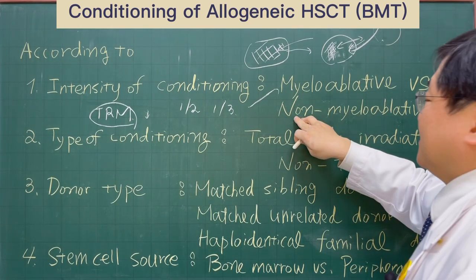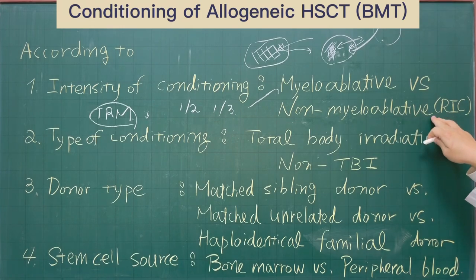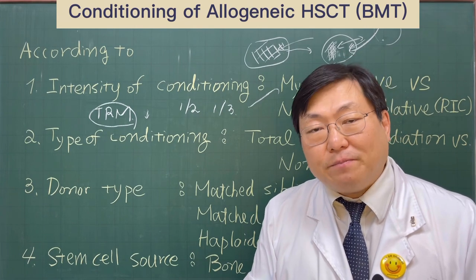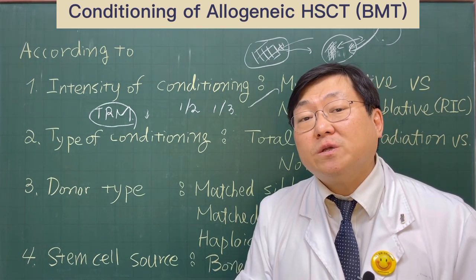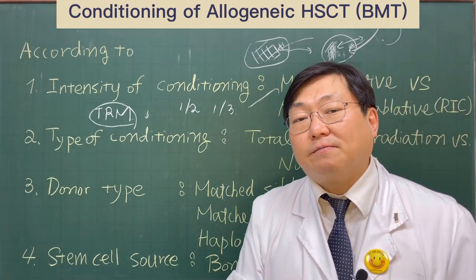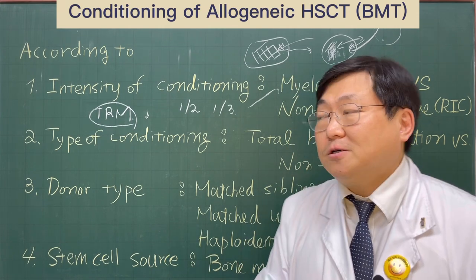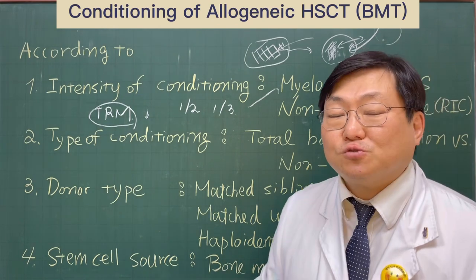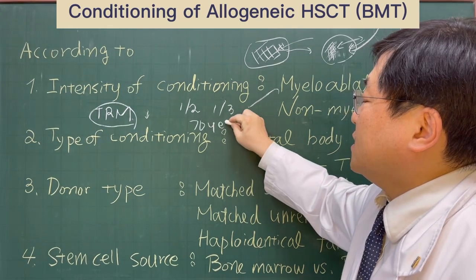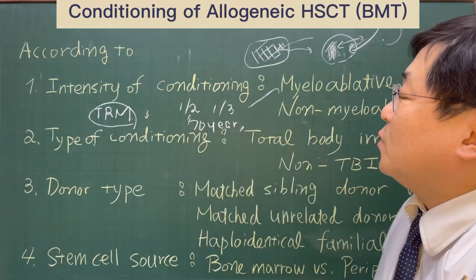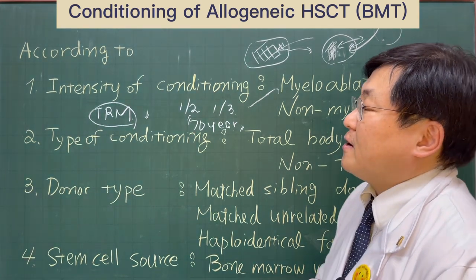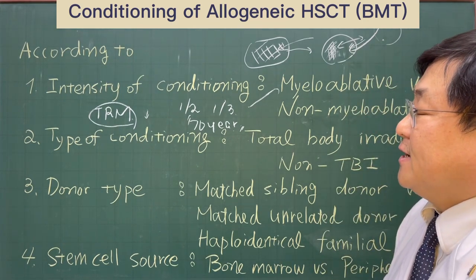After adopting non-myeloablative stem cell transplantation and conditioning, we can transplant elderly patients more than 60 years old and patients with comorbidities such as cardiac, liver, and kidney problems. So we can extend the age limitation up to 70 years old, especially in specific situations for allogeneic cell transplantation.